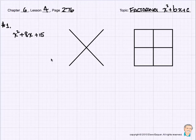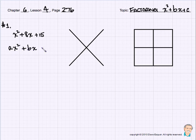Good morning. Chapter 6, Lesson 4 is on page 276. We're going to be factoring today using the box method. I'm going to be factoring everything in Chapter 6 with the form AX² + BX + C.